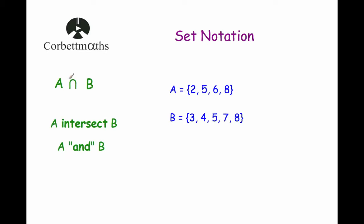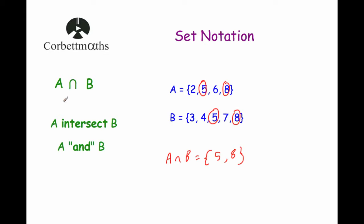Our next symbol is the intersect symbol. You would read it as A intersect B, and what it means is the members or elements of A that are also elements of B — so the numbers that are in both set A and set B. A lot of people read it as 'A and B'. So here we've got set A which is the numbers 2, 5, 6 and 8, and set B which is 3, 4, 5, 7 and 8. The elements of A that are also elements of B would be 5 and 8, so the set A intersect B would be {5, 8}.